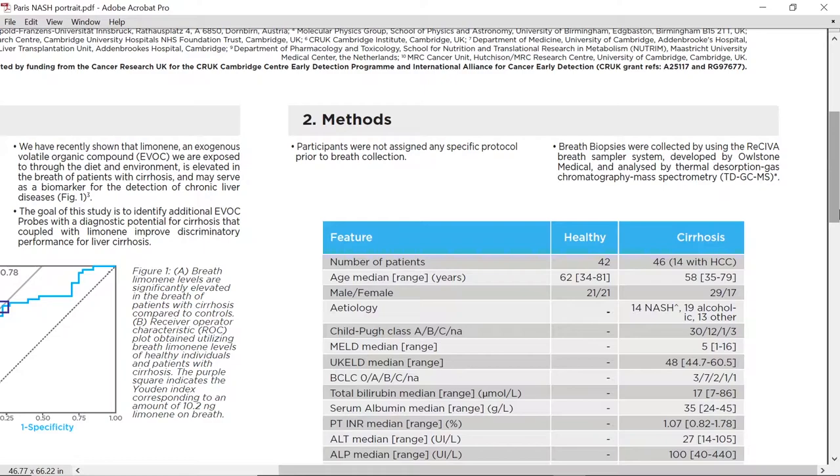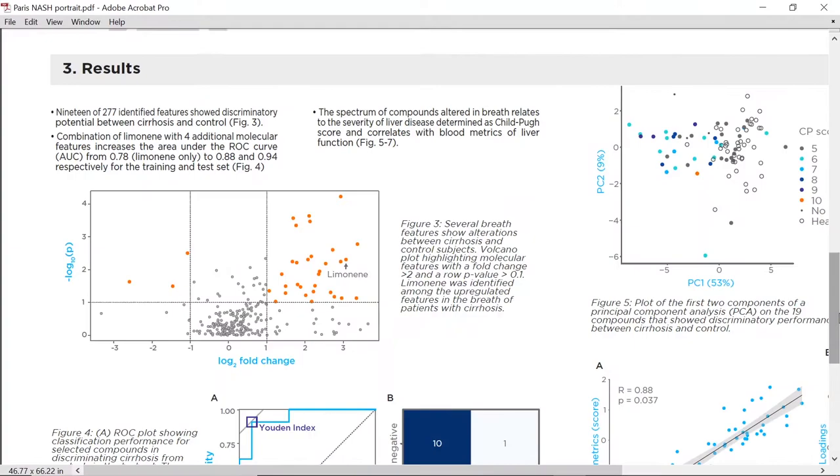To achieve our goal, we collected breath samples from 42 controls and 46 patients with cirrhosis by using the breath biopsy platform and analyzed them by using thermal desorption, gas chromatography, mass spectrometry. Details of the patients can be found in Table 1.